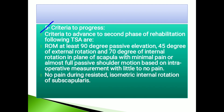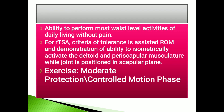Criteria to advance to the second phase of rehabilitation following TSA: range of motion of at least 90 degrees passive elevation, 45 degrees of external rotation, and 70 degrees of internal rotation in the plane of the scapula with minimum pain; almost full passive shoulder motion based on intraoperative movement with little to no pain; no pain during resisted isometric internal rotation of the subscapularis; ability to perform most waist-level activities of daily living without pain. For reverse TSA, criteria include tolerance of assisted range of motion and ability to isometrically activate the deltoid and periscapular musculature while the joint is positioned in the scapular plane.